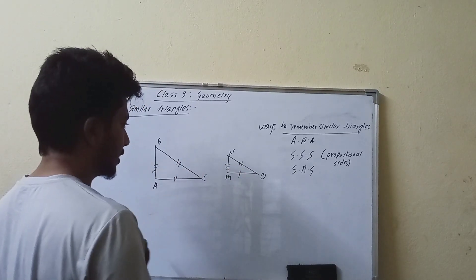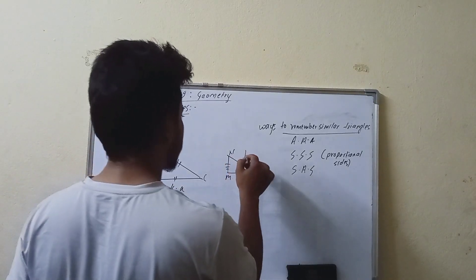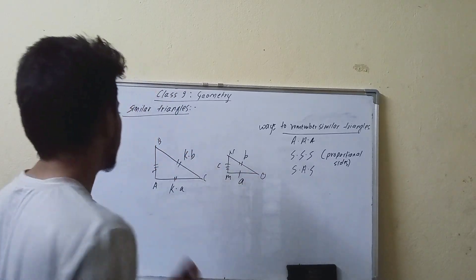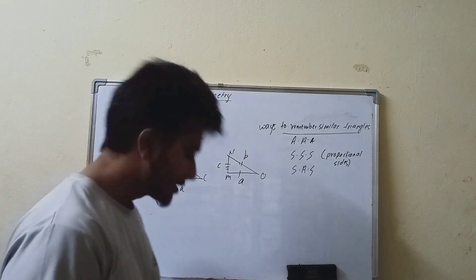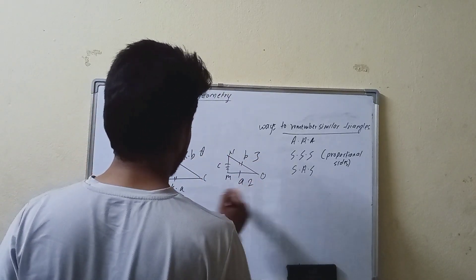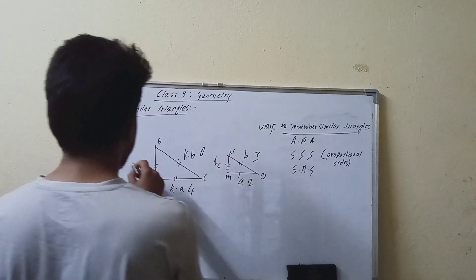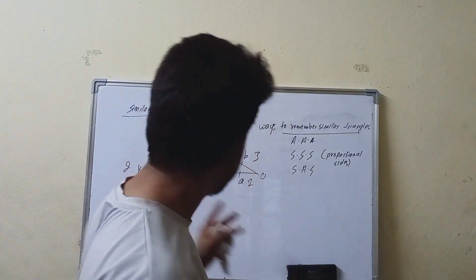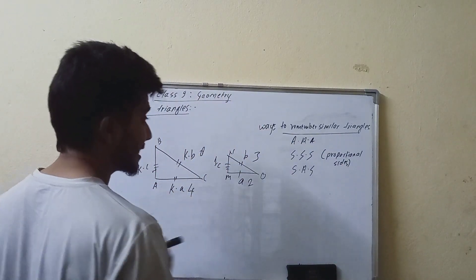The sides are proportional. This side equals k times a, this is b and this is k times b. This is c centimeters and this is k times c — meaning k is the multiplication factor. For example, this side is 6, this is 4, and this is 1.